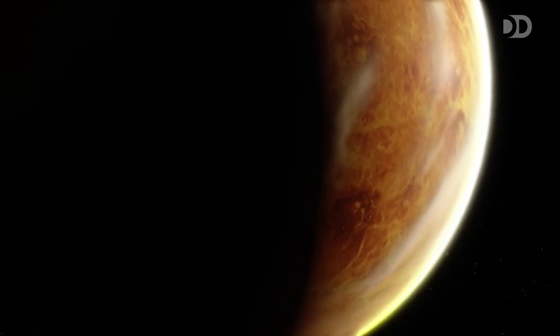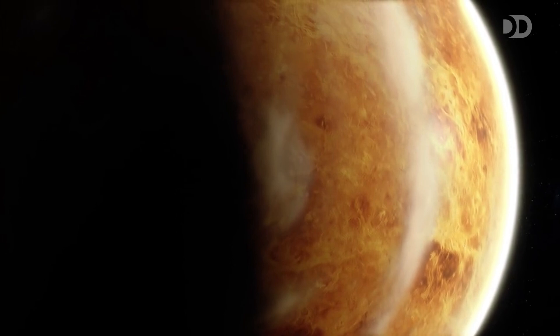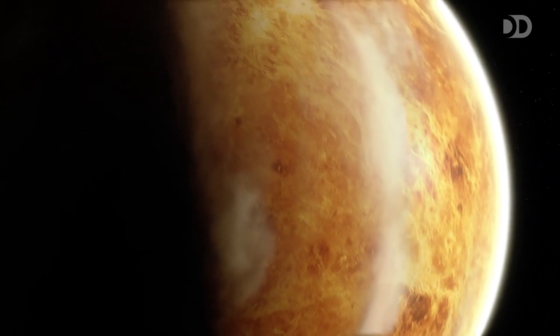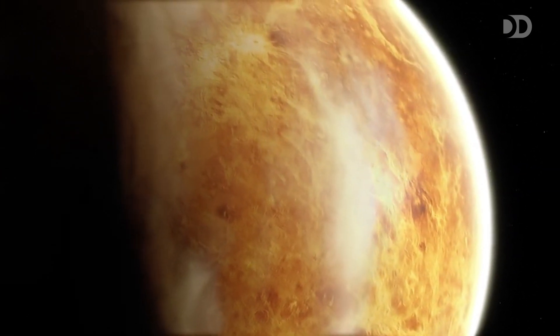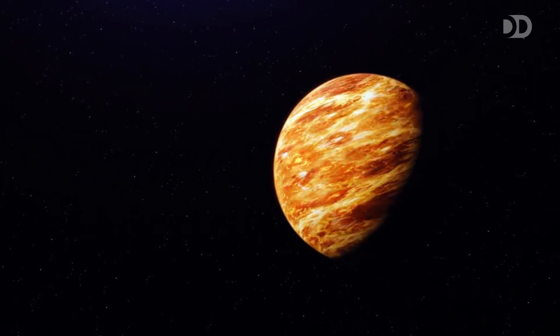Venus is perpetually hidden under a dense veil of clouds, making it impossible to see its surface with ordinary telescopes. For centuries, this shroud fueled speculation about what might lie beneath: lush jungles, vast oceans, or something far more alien.